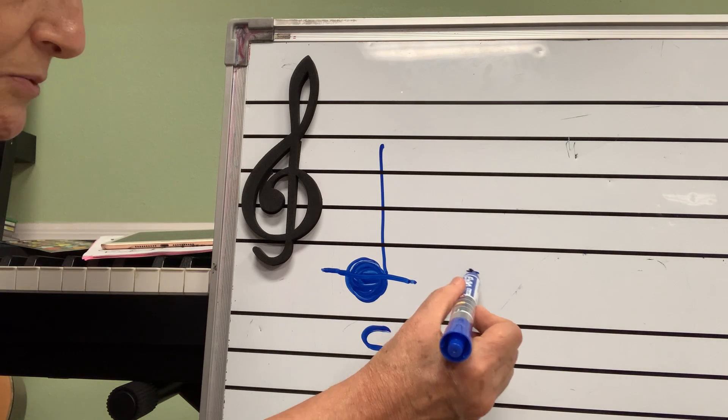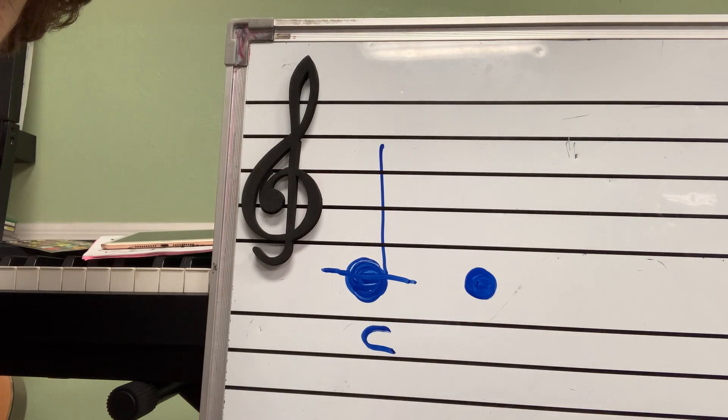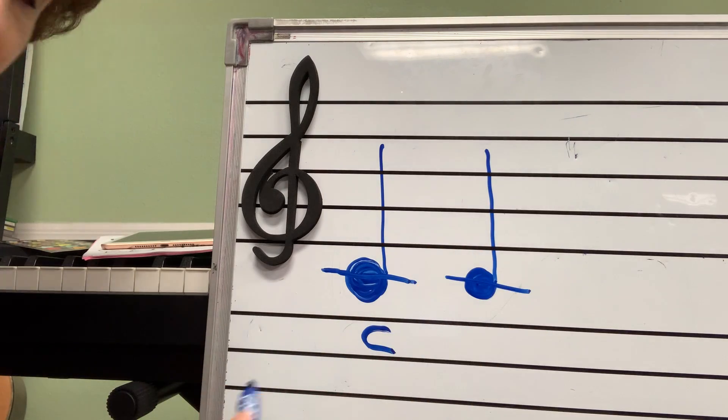Look how I make a C. I need to make the note outside of the lines. See, the circle is outside of the lines. Then I put the stick, then I put his hat. That's a C.